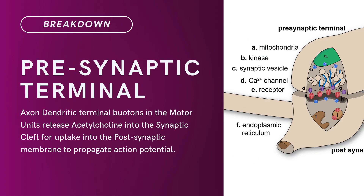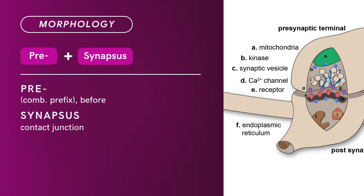Compound Term: Pre-Synaptic Terminal. Brief Definition: Dendritic terminal boutons in the motor unit release acetylcholine into the synaptic cleft for uptake into the post-synaptic membrane to propagate action potential. Term Morphology: Pre- means before. Synaptic means point of contact. -Adicus is a suffix denoting ability or function.